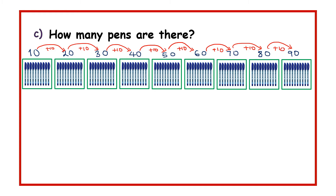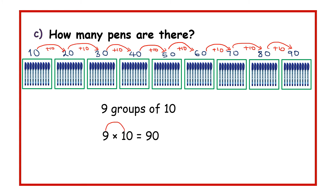So we have 9 groups of 10, and that is 9 times 10. I want you to see that if you get 9 times 1 you get 9, and you simply add a 0 in the ones place to come up with 90. Therefore, there are 90 pens altogether.